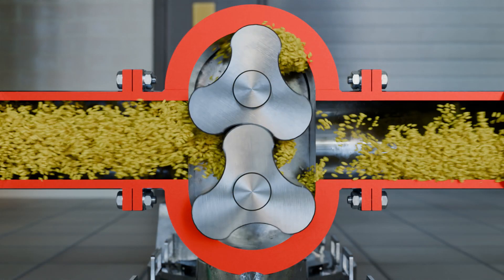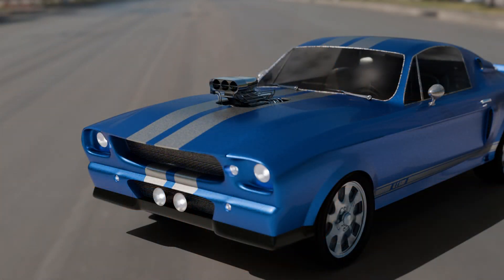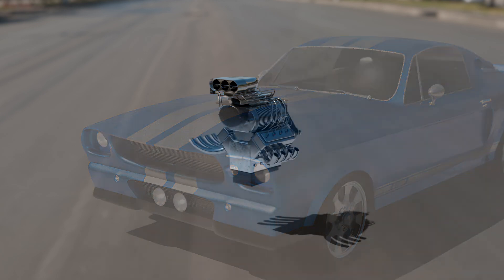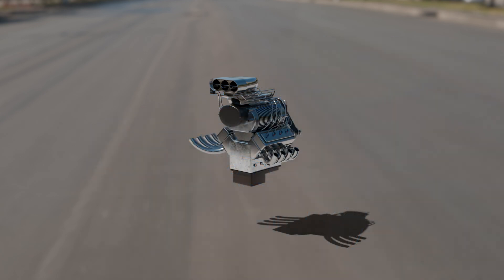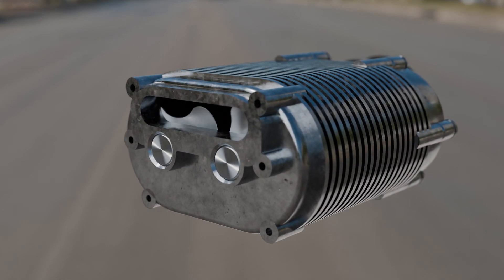As already mentioned, rotary lobe pumps are also used for supercharging combustion engines. These roots blowers or roots-type superchargers are usually seen on so-called muscle cars, where the compressors are clearly visible on the hood. Roots-type superchargers are usually driven by a belt drive that is connected to the engine. The animation schematically shows the design of a roots blower.